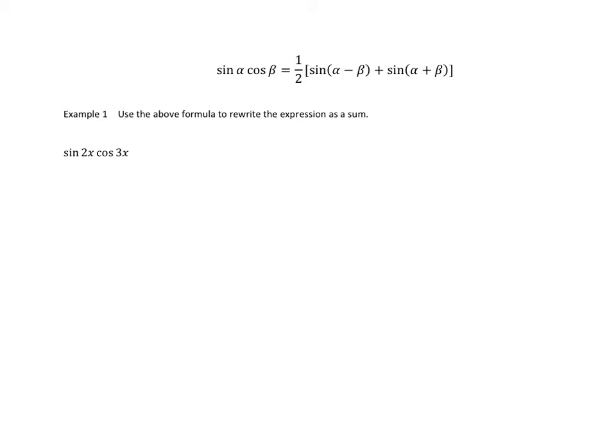I'm just going to identify that alpha is equal to 2x and beta is equal to 3x. If I plug all this information into this formula, I can split this product into the sum of two sine functions.